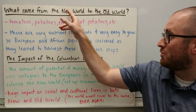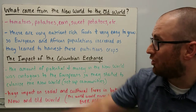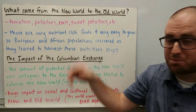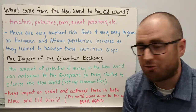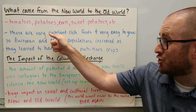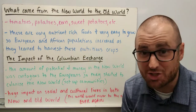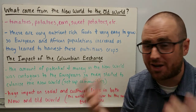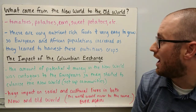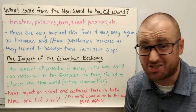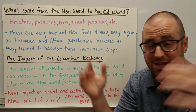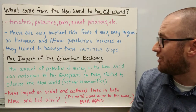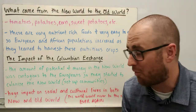So let's talk about what came from the new world back to the old world. The Europeans found tomatoes, potatoes, corn, sweet potatoes — they all brought those back from the new world. These were very nutrient-dense, nutrient-rich foods, meaning they were very nutritious, had a lot of calories and nutrients like protein. So the European and African populations just absolutely exploded because they took advantage of these crops, which were way more nutritious than what they were growing over there.